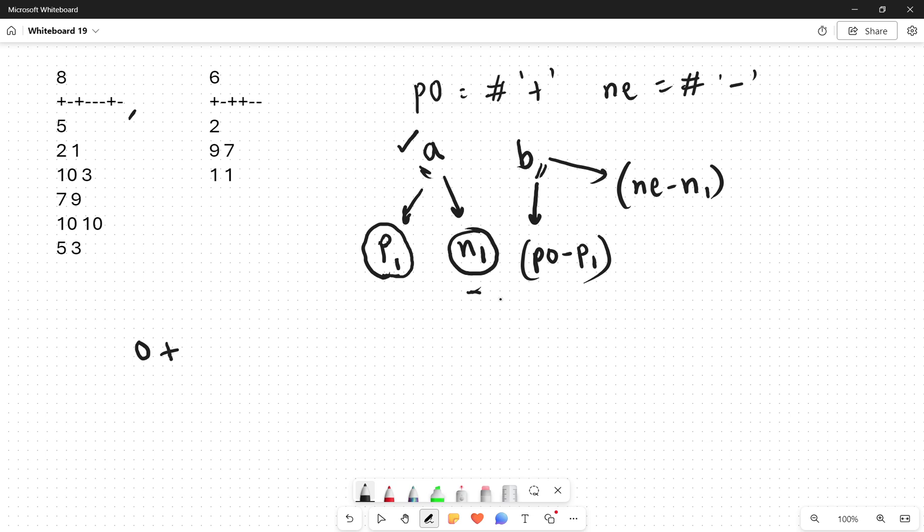If I select a when the sign is negative n1 times, then automatically B will get selected NE minus n1 times. Initially your score was 0 and after performing all the operations your score must be 0 if you want to win. So how will the score be calculated? It is a*p1 minus a*n1 plus B*(PO-p1) minus B*(NE-n1) equals 0.